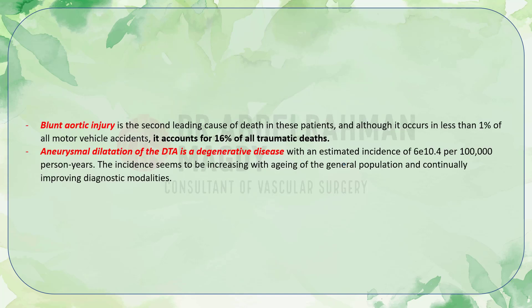Blunt aortic injury is another entity of distal thoracic aortic diseases and is the second leading cause of death in these patients. Although it occurs in less than 1% of all motor vehicle accidents, it accounts for 16% of all traumatic deaths. Aneurysmal dilatation of the distal thoracic aorta is a degenerative disease with an estimated incidence of 6 to 10.4 per 100,000 person-years, with incidence increasing due to aging populations and improving diagnostics.